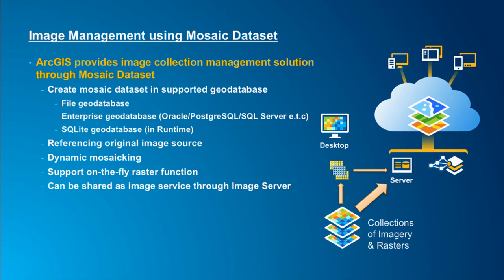The key feature of the mosaic dataset is that it references the original image data source — it's not actually moving pixels from your original image files into the geodatabase. It provides a dynamic mosaicing view; you're not physically merging them together. It also supports on-the-fly raster functions that you can add to your image collection. The mosaic dataset can be shared as an image service through image server to serve large collections to any client.